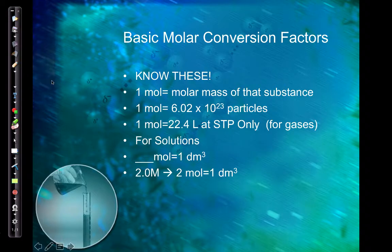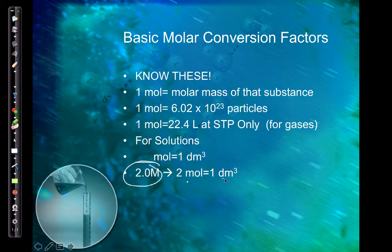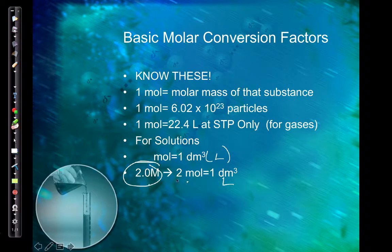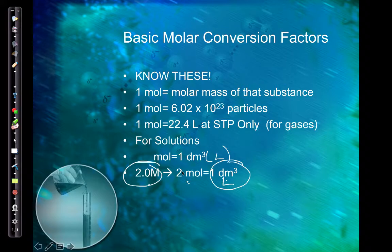For solutions, you use your molarity. So if you have that big M, that means you have 2 moles for every 1 liter — dm³ would also be a liter, same thing. For solutions, we always use the molarity as the conversion factor between moles and liters of the solution. If it's a solution, you're looking at molarity; if it's a gas, you might be looking at 22.4 liters, but only at STP.